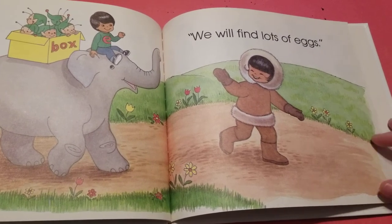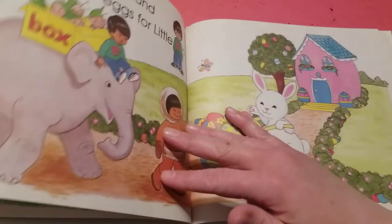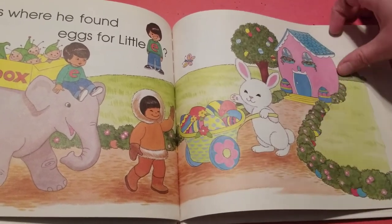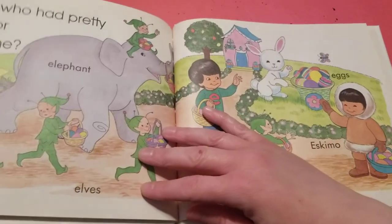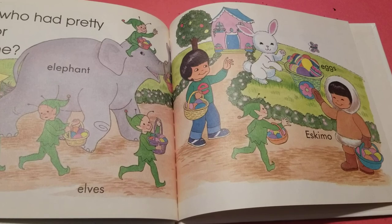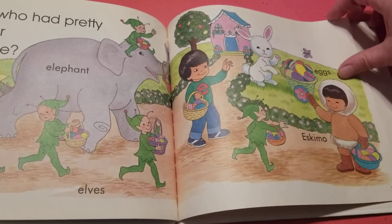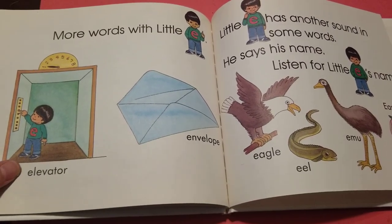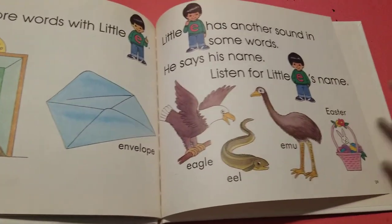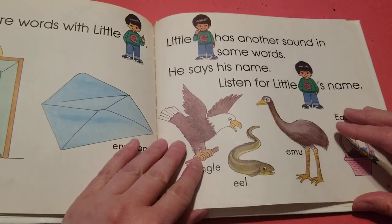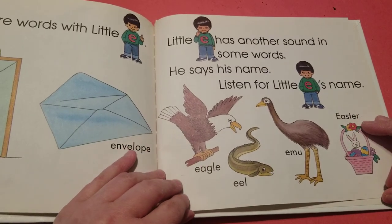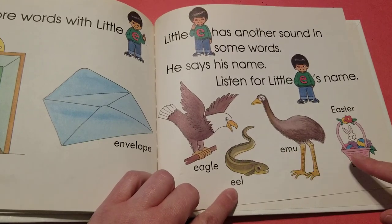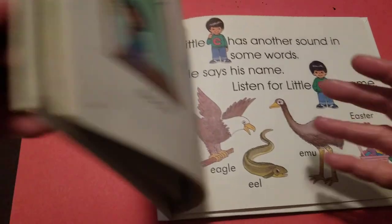We will find lots of eggs. Guess where he found eggs for little E. Looks like they went to the Easter Bunny's house. Guess who had pretty eggs for everyone. More words with little E. Elevator. Envelope. Little E has another sound in some words. He says Easter Bunny. All right.